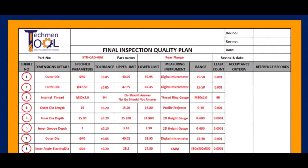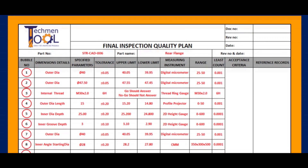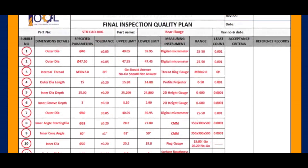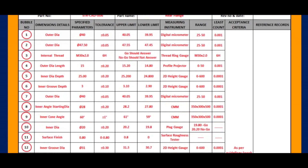This is the sample final inspection quality plan. This consists of information about part description, bubble number, dimension details and their tolerances, upper and lower specific limits, instrument details, and acceptance criteria.